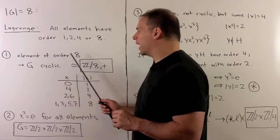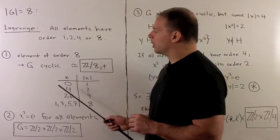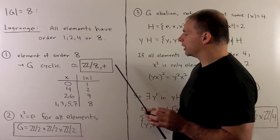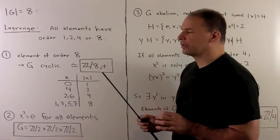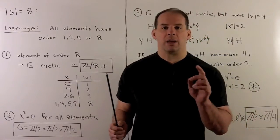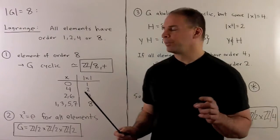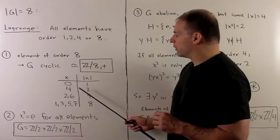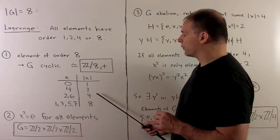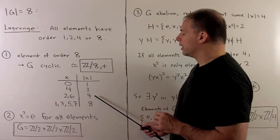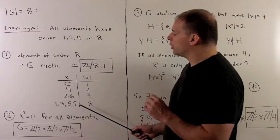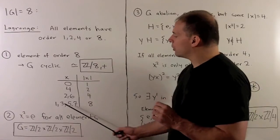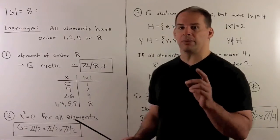First, if there's an element of order 8, then our group is cyclic, so it's isomorphic to Z mod 8 under addition. To help distinguish it from the other cases, we note we have a unique element of order 2, two elements of order 4. In the cyclic group, this will be the only one that has elements of order 8, and we have four of those.